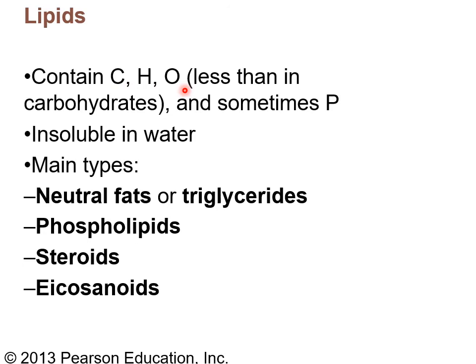Lipids contain carbon, hydrogen, and oxygen — less oxygen than carbohydrates — and sometimes phosphorus. They're insoluble in water; we also call them fats. There are four major groups: triglycerides (the most common fat), phospholipids, steroids, and eicosanoids. Eicosanoids are generally compounds involved with inflammatory processes; we'll talk about them more in later chapters.